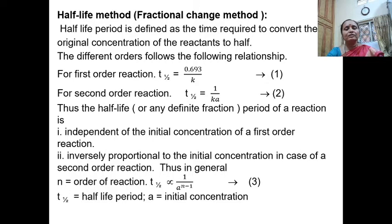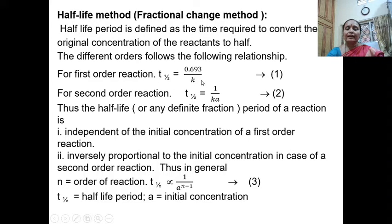The different orders follow the following relationship. In case of a first-order reaction, half-life is given by the expression T-half = 0.693 / K. In case of a second-order reaction, half-life is given by the expression T-half = 1 / K. Thus, the half-life period for a first-order reaction is independent of initial concentration because there is no concentration term in the expression. Likewise, in case of a second-order reaction, the half-life period is inversely proportional to the initial concentration.